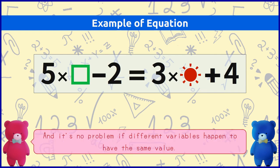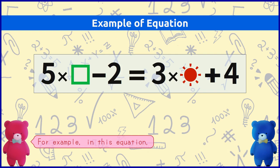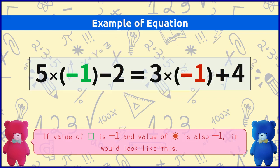And it's no problem if different variables happen to have the same value. What do you mean? For example in this equation, if value of square is 3 and value of sunshine is also 3 it would look like this. If value of square is minus 1 and value of sunshine is also minus 1 it would look like this. Got it?